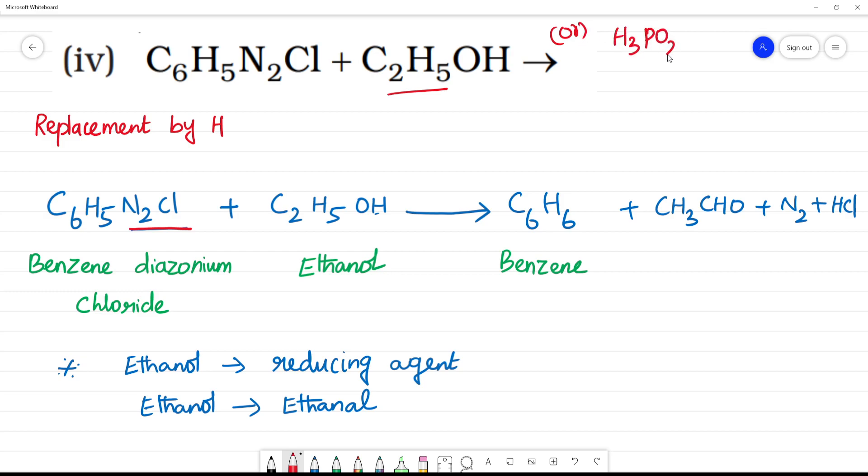This one is H3PO2. This one is H3PO2 in the reaction, in the reagent. We need benzene. Clear? So this is a reducing agent which reduces this benzenediazonium chloride and they get oxidized. Clear?